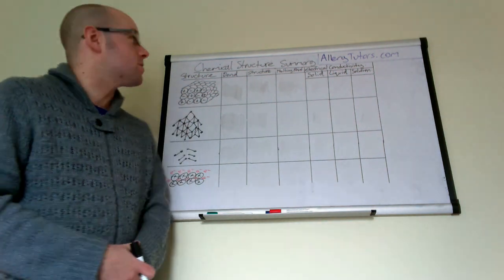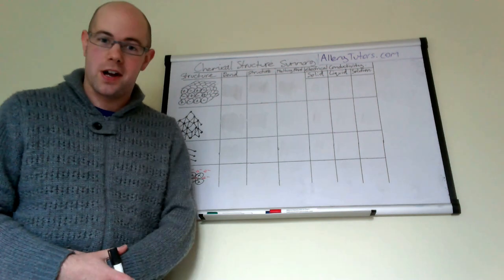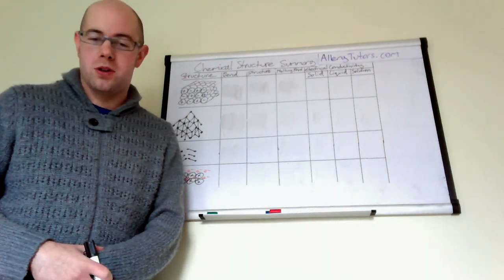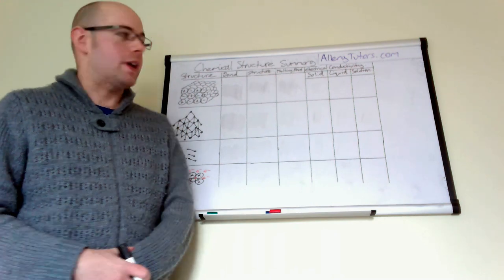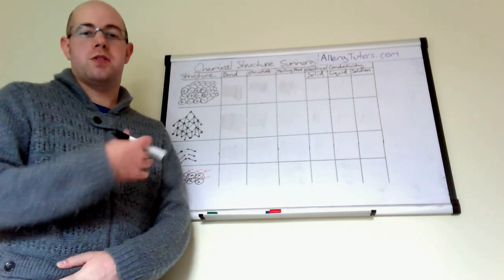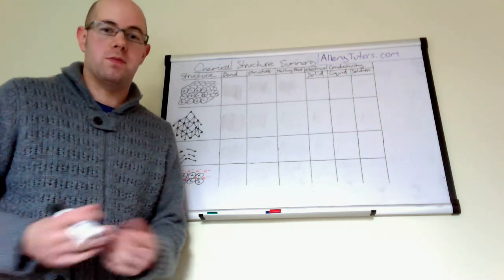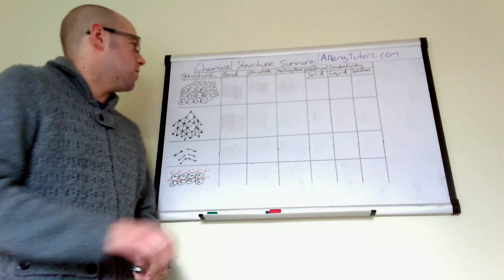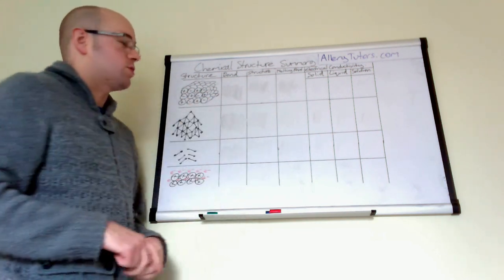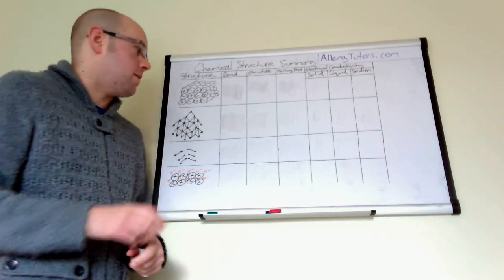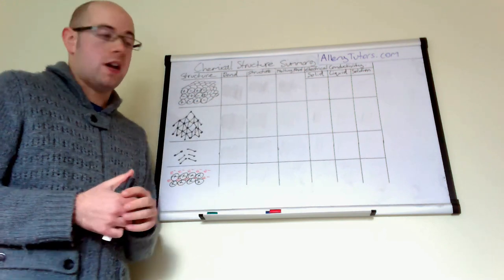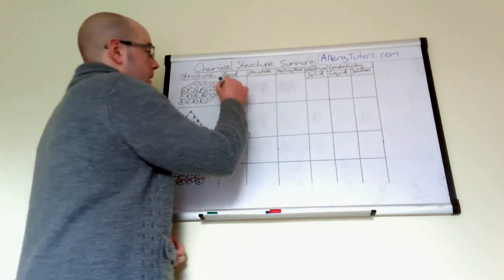In this video we're going to look at chemical structure and a summary of the structures that you would normally find in chemistry. We're going to go through the properties of them and do an explanation of some of those properties too. We've got four different structures to go through, showing what the properties are and explaining some of them as well. Here's our first one — this is an ionic compound.